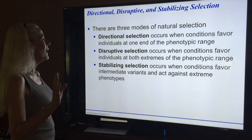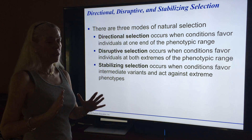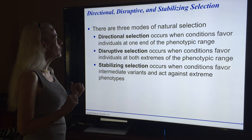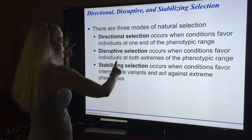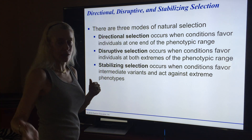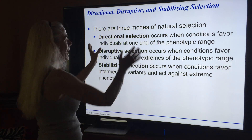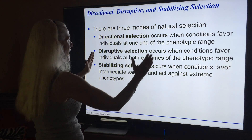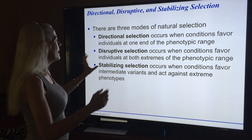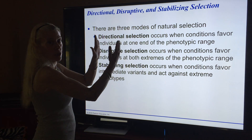You need to know these types of selection and be able to visualize the graphs associated with them. Directional selection occurs when conditions favor individuals at one end of the phenotypic range — you'll see the graph moving in one direction. Disruptive selection is when the graph kind of breaks into two — conditions favor individuals at both extremes. Stabilizing selection occurs when conditions favor the intermediate variance and act against extremes, so the average becomes more the norm and the graph narrows.